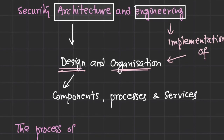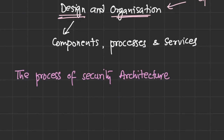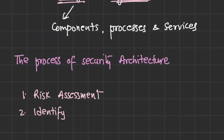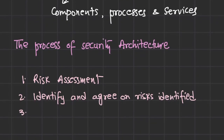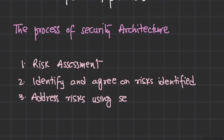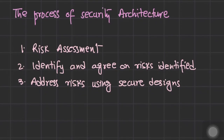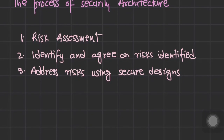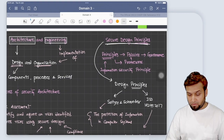The process of security architecture for an organization follows three steps: first we do a risk assessment, then we identify and act on the identified risks, and then we address those risks using secure design. We go through standard security mitigation processes — we can accept the identified risk, avoid the risk, mitigate the risk, or transfer the risk — and all of these can be addressed through secure design.